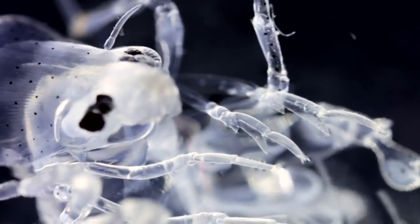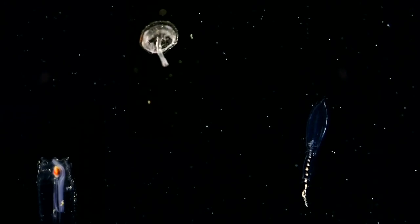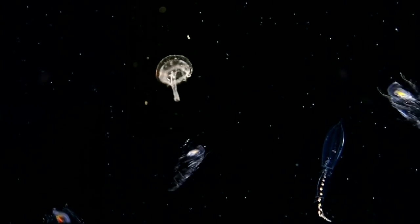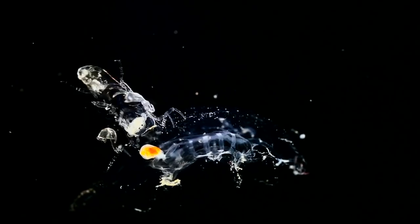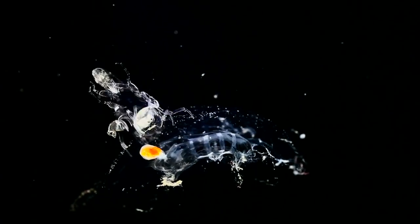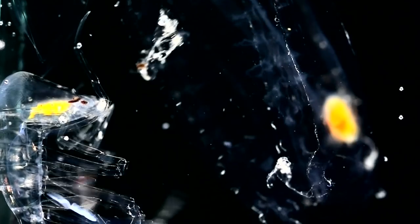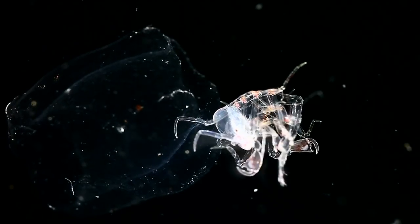Different species of phronoma specialize in capturing siphonophores, salps, and jellyfish. The phronoma eats its prey and chops the gelatinous parts to fashion its own transparent barrel.